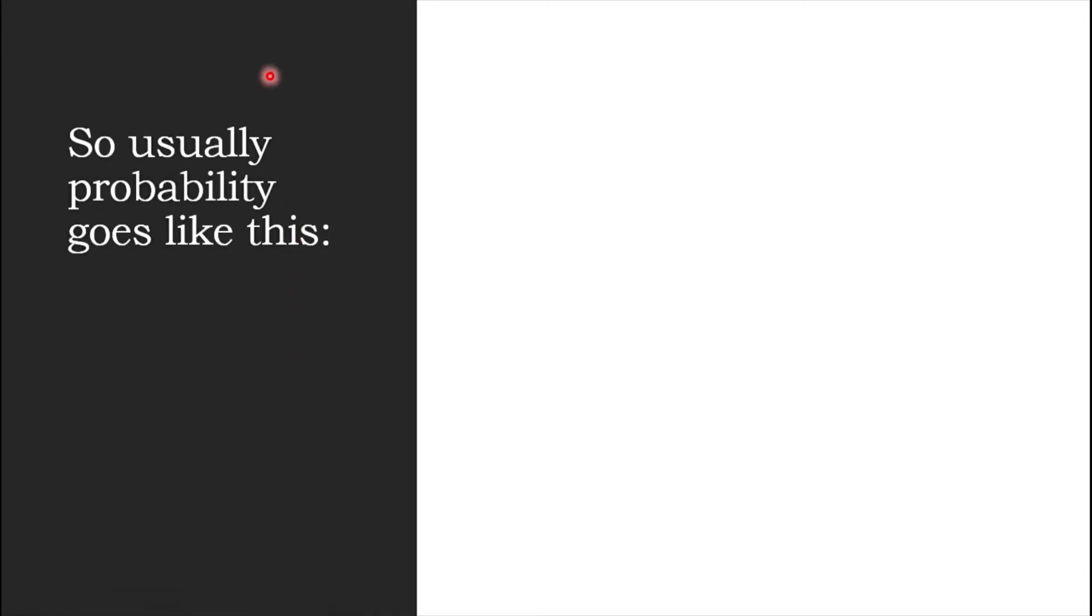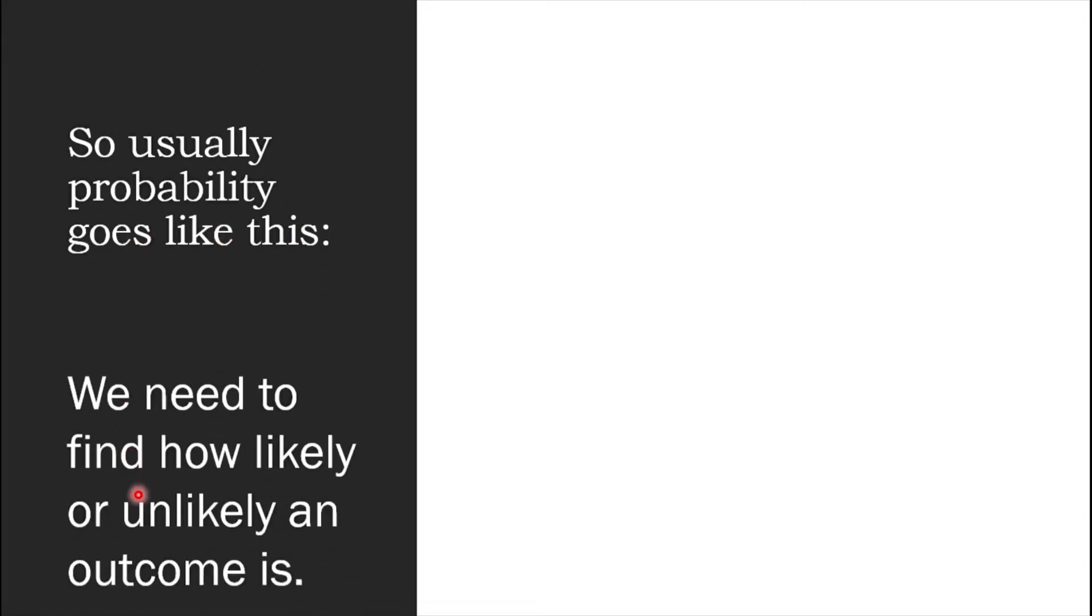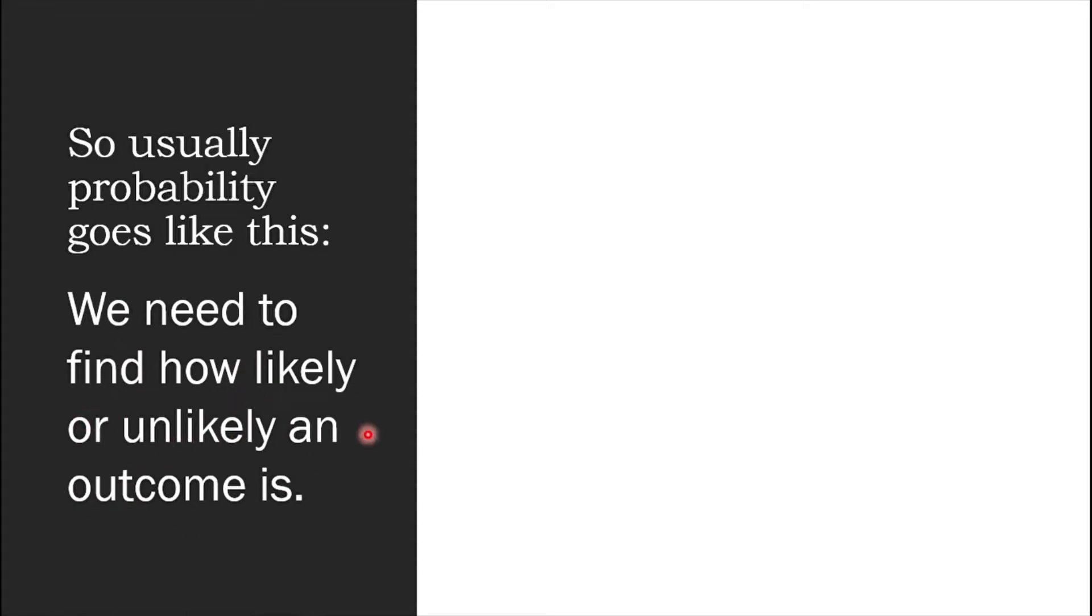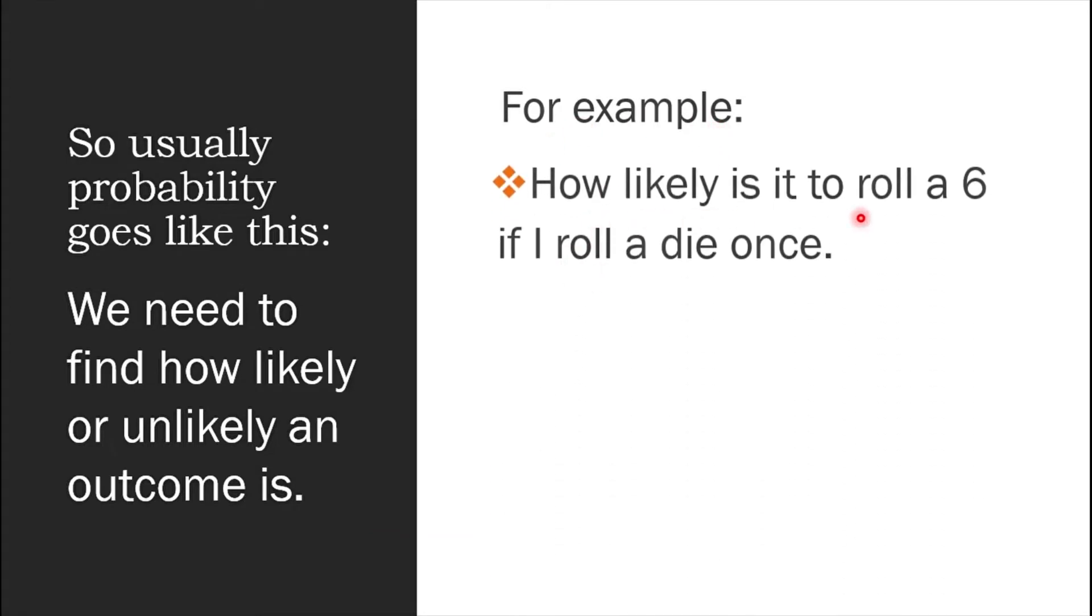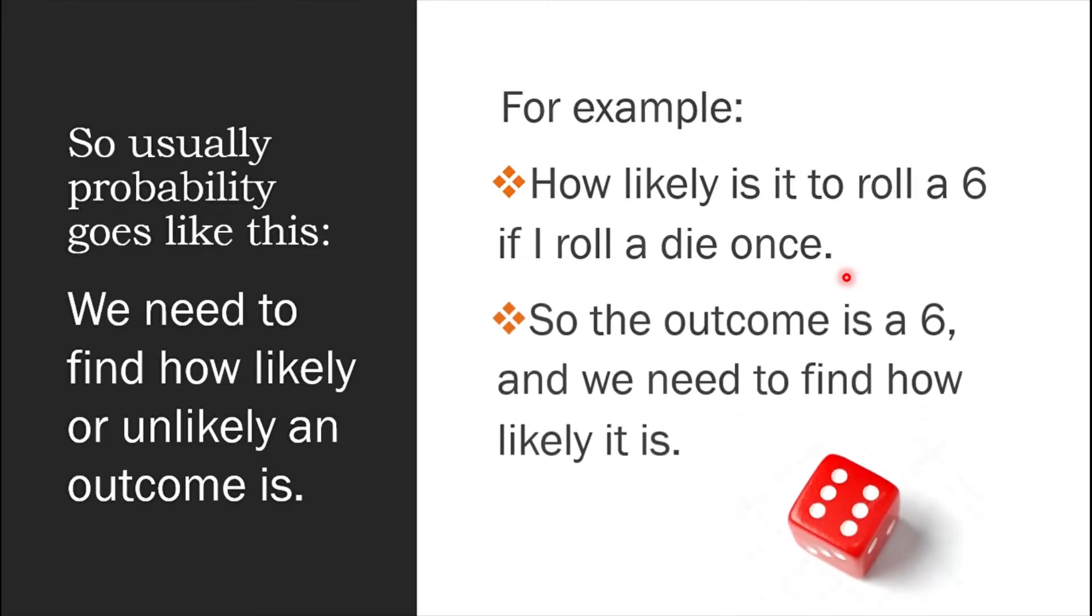Usually probability goes like this. We need to find out how likely or unlikely an outcome is. For example, how likely is it to roll a 6 if I roll a die once?